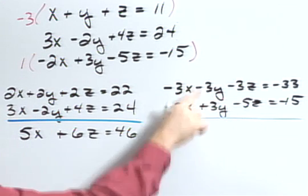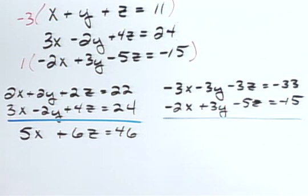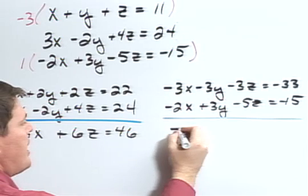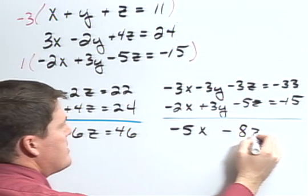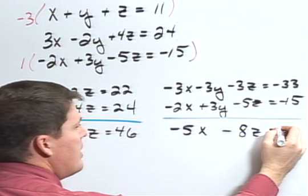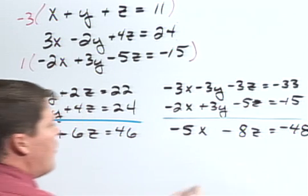Now when I add these together, again notice my y's drop out. So I'm left with negative 5x minus 8z equals negative 48.